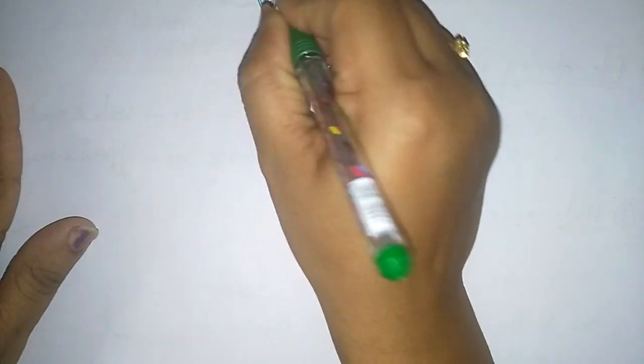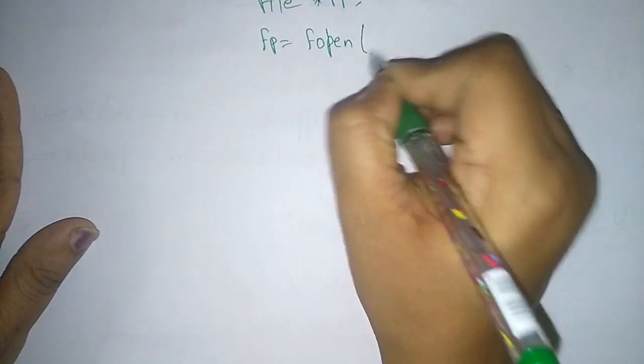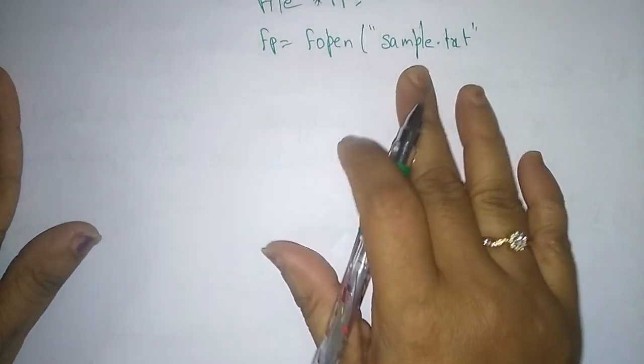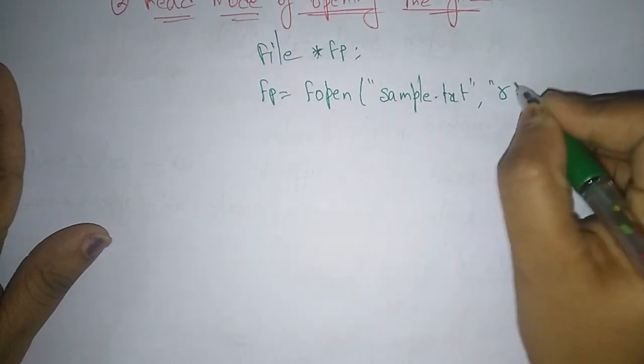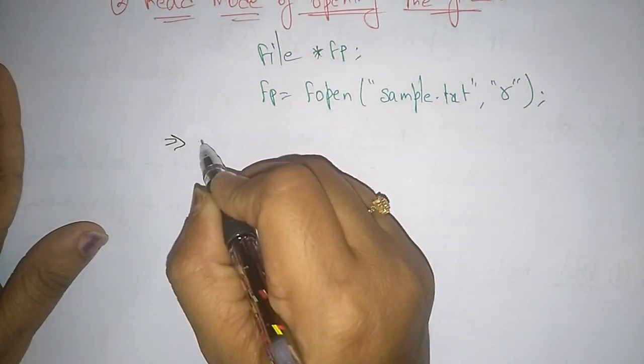Now the second mode is the read mode of opening the file. First you have to declare the file pointer fp, then fp = fopen("sample.txt", "r"). Whether the file may be present or not, you want to open sample.txt in read mode. What are the steps you have to follow while reading the file?